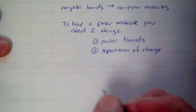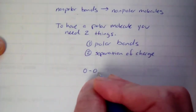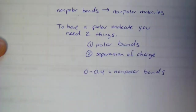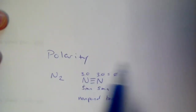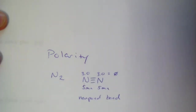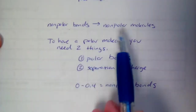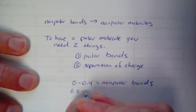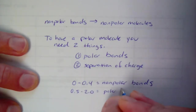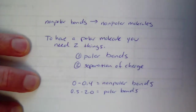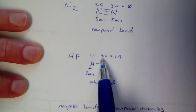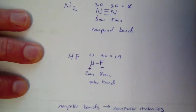You're going to look at electronegativity differences and use this scale. A difference of 0 to 0.4 gives nonpolar bonds — automatically a nonpolar molecule. The range for polarity is 0.5 to 2.0. If the difference falls in that range, you have polar bonds, you meet the first criteria, and then you move on to the second. In our hydrogen fluoride example, we had a difference of 1.9, which is why that's a polar bond.